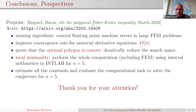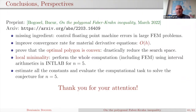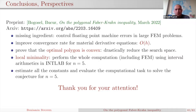To conclude: we have a preprint available with all details. A missing ingredient for establishing local minimality is controlling floating point errors in large-scale computations, which we hope to address. To reduce the problem to a finite number of computations, proving convexity of the optimal polygon would drastically simplify things. The goal is to apply this strategy at least for N = 5, yielding a new proven case of the polygonal Faber-Krahn inequality.